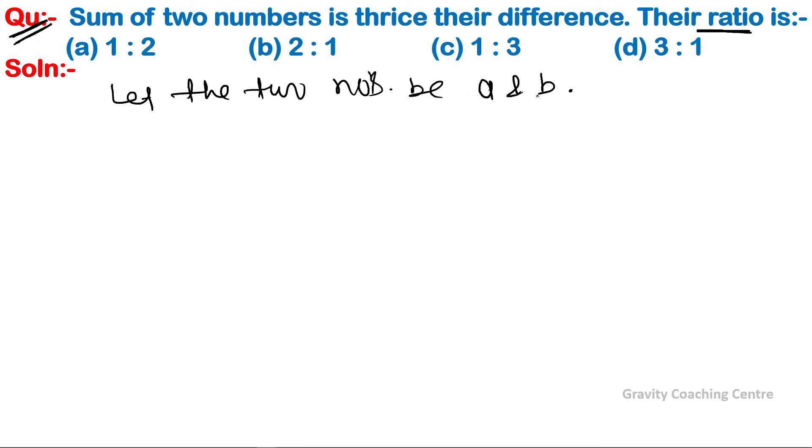a and b. According to the question, sum of two numbers means a plus b is equal to thrice their difference, so three into (a minus b). So this implies that a plus b equal to three